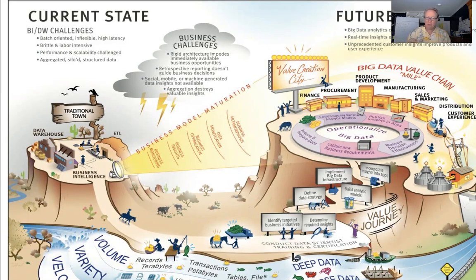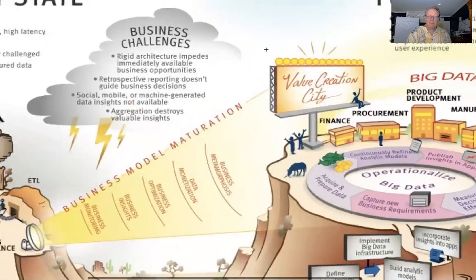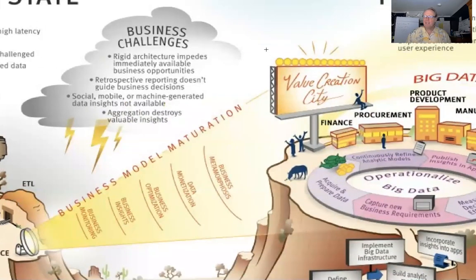It was really hard for organizations to go from that traditional model and become more predictive, more prescriptive, more real-time. The business challenges highlighted in this slide include very rigid architecture, which impeded organizations from rapidly taking advantage of business opportunities. Retrospective reporting doesn't help predict what's going to happen. Social, mobile, and machine-generated data like IoT data just were not available — you couldn't put them in a data warehouse; they're just too massive.